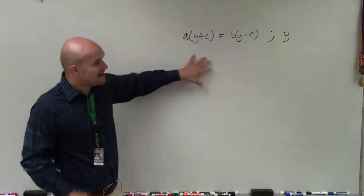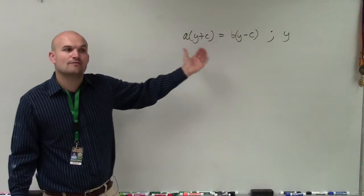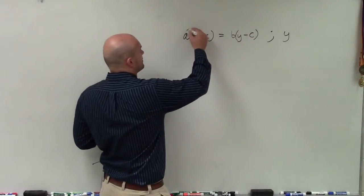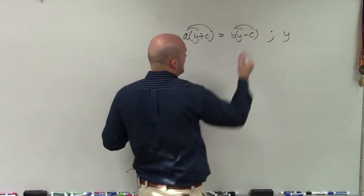But basically, the main thing we need to do is simplify and get our variable by itself. So obviously, when I have parentheses, just like when we did with multi-step, we need to apply a distributive property, right?